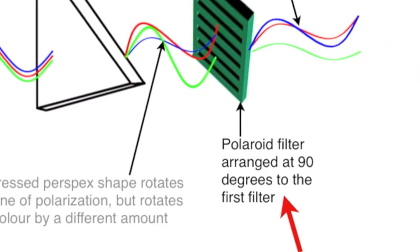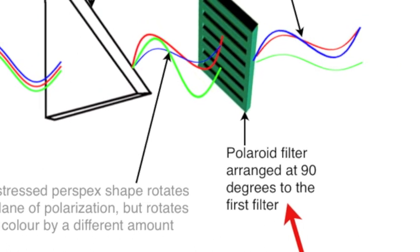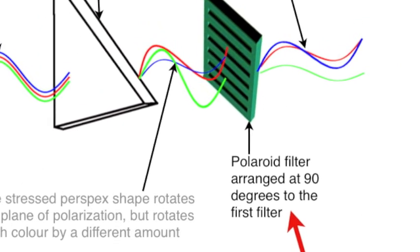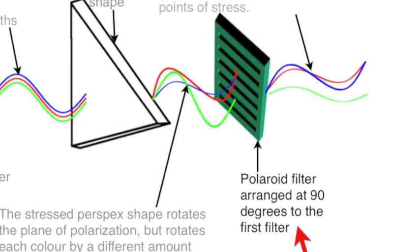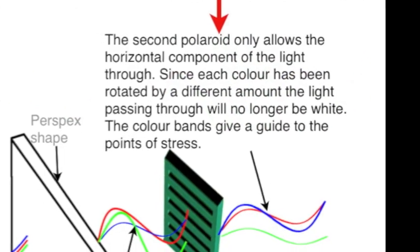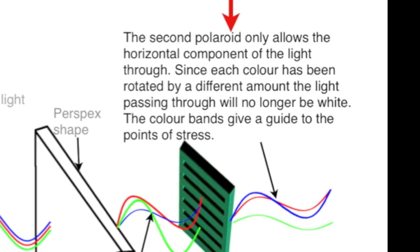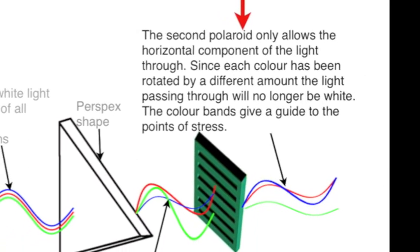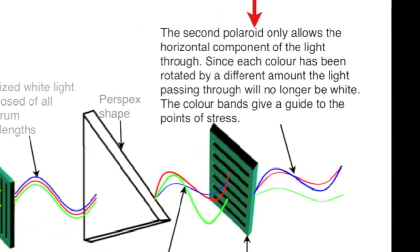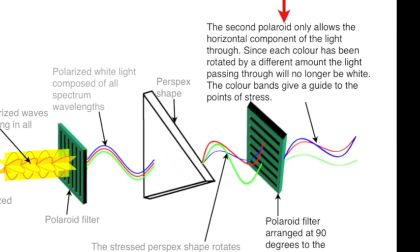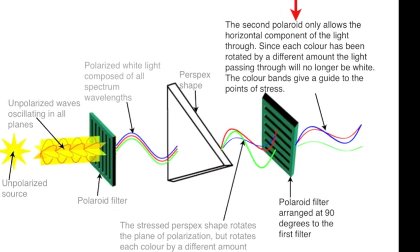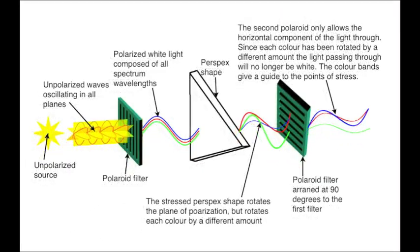This light then passes through a second Polaroid filter, in this case arranged at 90 degrees to the first. That Polaroid shown here will only allow the horizontal component of the light to pass through. Since each color has been rotated by a different amount, the light passing through will no longer be white, but will be banded. The width and color of the bands give a guide to the amount of stress in the model.